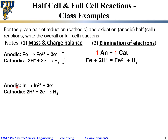Let's look at another example. The anodic or oxidation half-cell reaction is for indium atom to lose three electrons and become In³⁺. Mass is balanced, charge is balanced. For the cathodic or reduction half-cell reaction: two hydrogen on the left, two hydrogen on the right — zero charge on the left, zero charge on the right. So both half-cell reactions satisfy mass and charge balance.